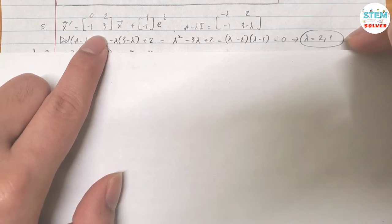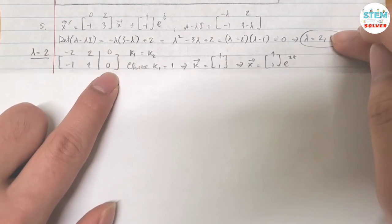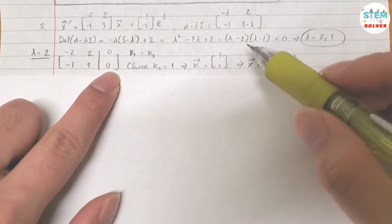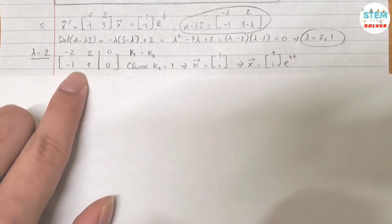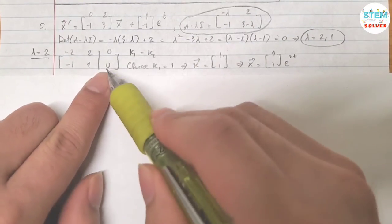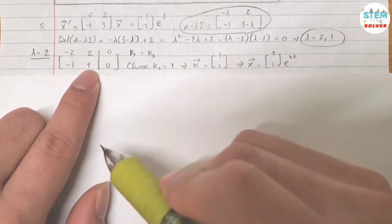So here's my eigenvalues. For lambda equals 2, plug it into A-lambda-I. That gives me this matrix augmented with 0. Use the second equation. That gives me k1 equals k2.